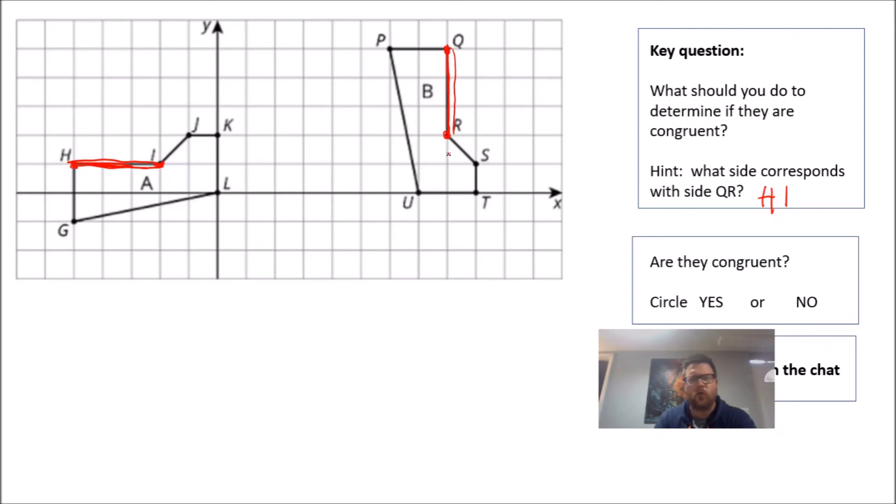U and T, two units. K and L, two units. Are they congruent? Yeah, definitely. Explain why in the chat. All sides are the same length.